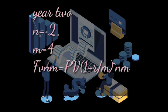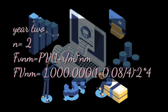For year two, we use the same formula. Our n is two and our m is still four. FV equals PV into brackets one plus r over m, power n times m. We substitute: present value is one million, into brackets one plus 0.08 over four, power two times four, which gives power eight.